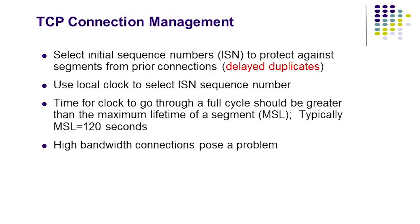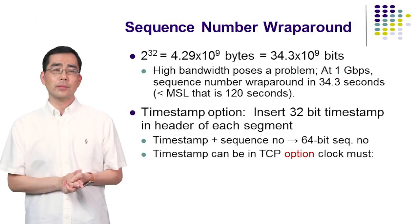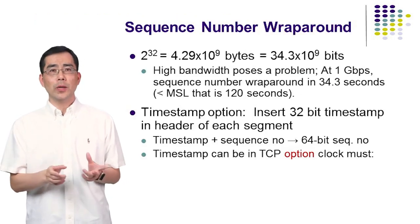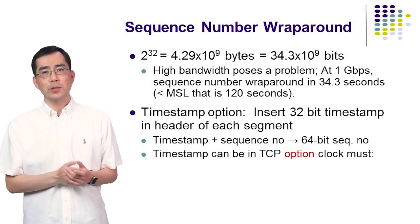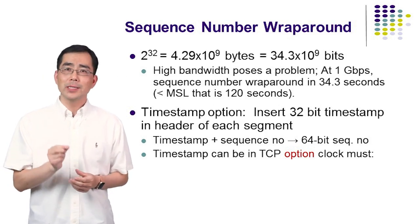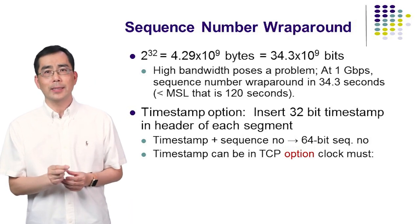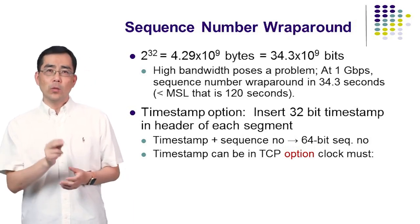The initial sequence number is used to protect against segments from previous connections that may circulate in the network and arrive at a much later time. TCP uses a local clock to select the initial sequence number. The time for the clock to go through a full cycle should be greater than the maximum lifetime of a segment — it is usually 120 seconds. But high-bandwidth links pose a problem. Let's see how long it takes to wrap around the sequence number space using a high-speed transmission line.